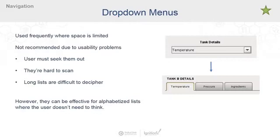On the right here we have two images — the before on top and the after on the bottom. You can see that we've taken this drop-down or select list and converted it into a tab system, which allows users to see all the options at once. That's great for situational awareness. Drop-down menus can be effective sometimes, like for alphabetized lists such as states or countries — but really only where your user already understands all the options and doesn't have to think about them.